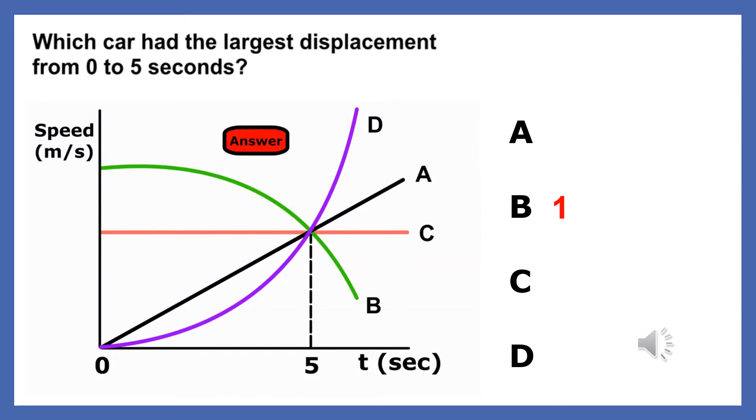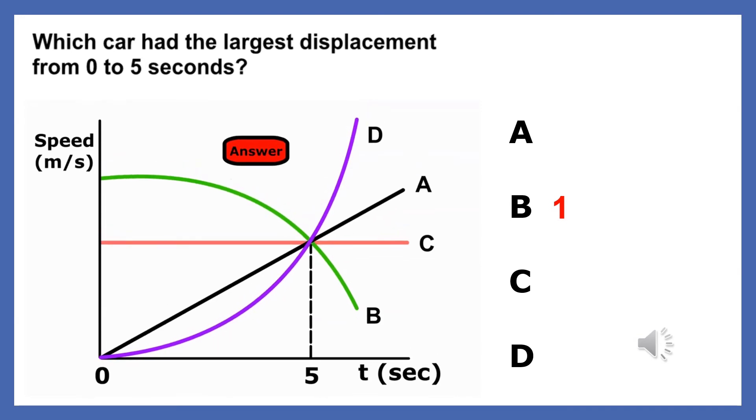But we can, however, find the object with the greatest displacement by looking at the area underneath the plot for each object. The object with the greatest area underneath will be, of course, object B.